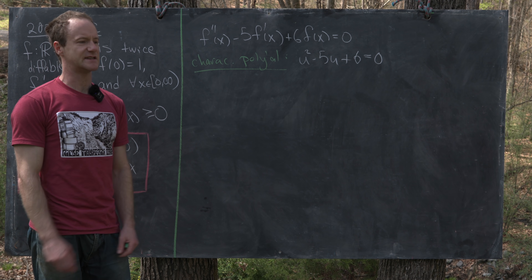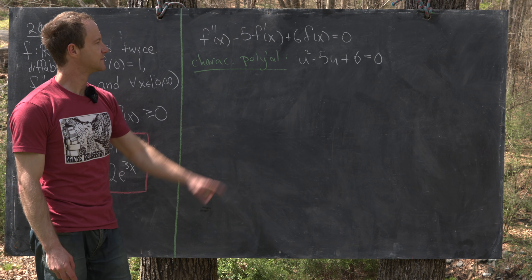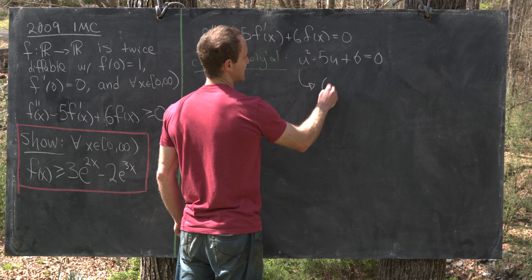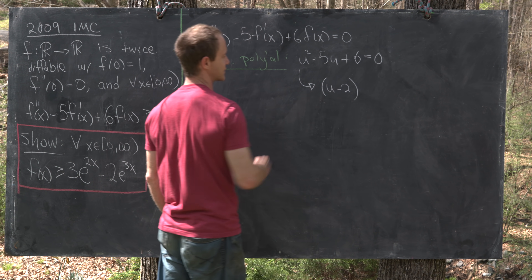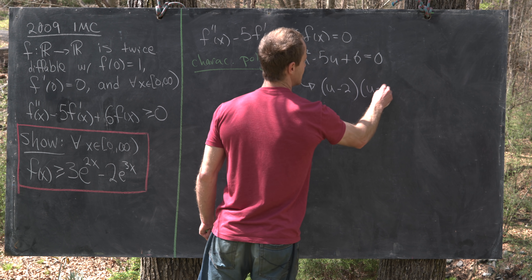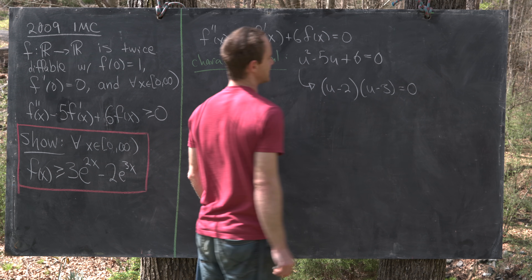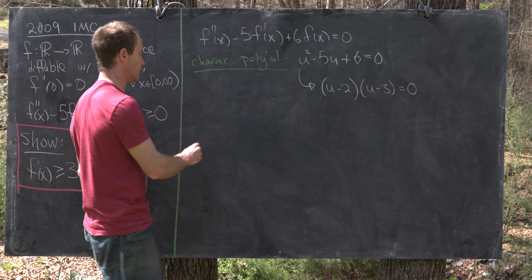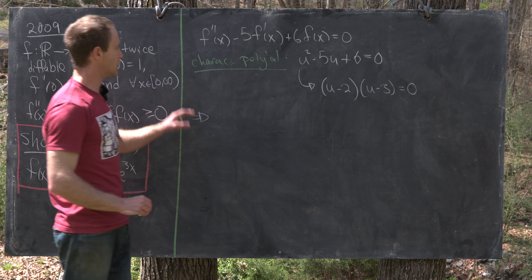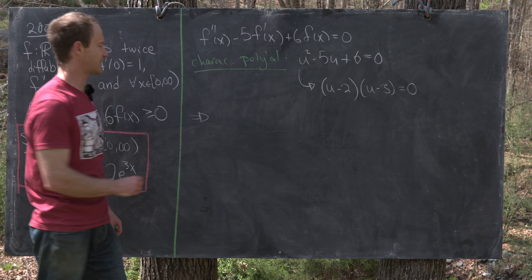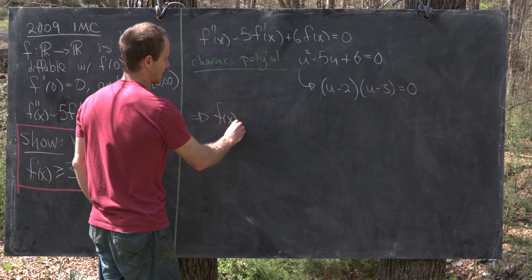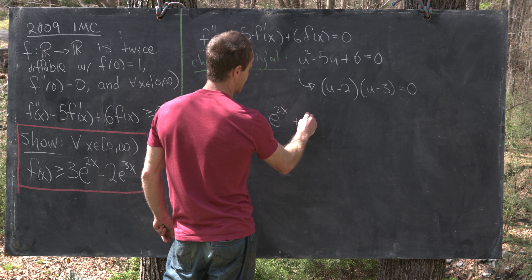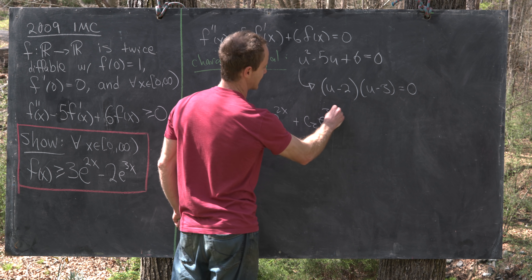This is pretty standard from a differential equations class. We can factor this pretty easily as (u − 2)(u − 3), so u = 2 and u = 3 are roots. That means the most general solution is f(x) = c₁e^{2x} + c₂e^{3x}, where those roots appear as the coefficients in the exponentials.